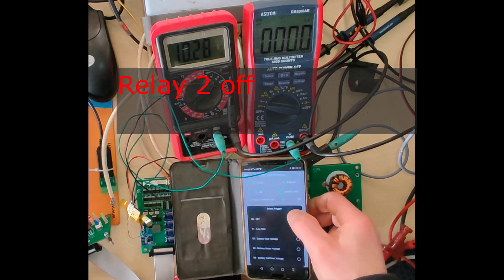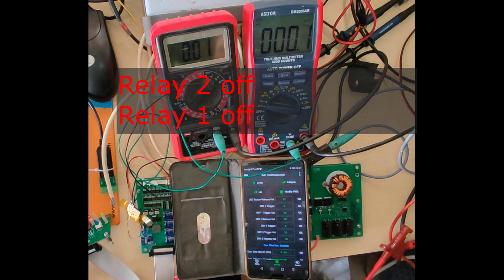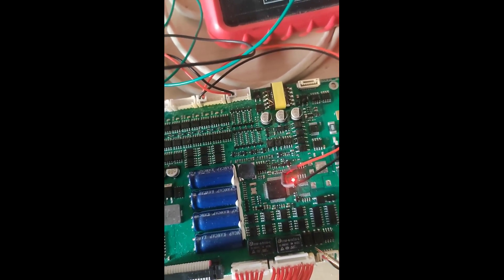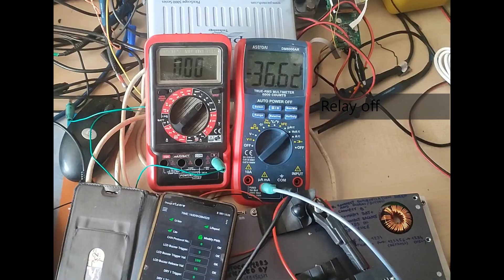But when I measured the supply voltage, it is only 11.08 volts. I am not sure why that is the case, but it explains the lower than expected coil voltage.